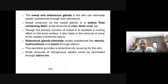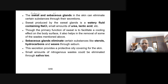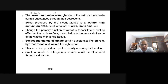Certain sebaceous glands in the skin can eliminate certain substances through their secretions. Sebaceous glands are also known as sudoriferous glands, or oil glands. Sweat produced by sweat glands is water-based and contains sodium chloride, small amounts of urea, lactic acid, etc. Though the primary function of sweat is to facilitate a cooling effect on the body surface, it also helps in the removal of some waste. Sebaceous glands eliminate substances like steroids, hydrocarbons, and waxes through sebum, which provides a protective oily covering for the skin. Small amounts of nitrogenous waste can also be eliminated through saliva.